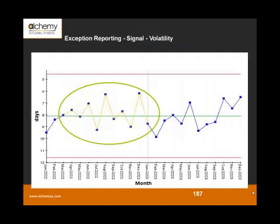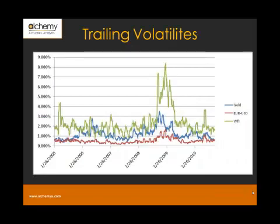The last and final exception type is increased volatility. Looking at the chart, you can clearly see numerous instances where a value goes up and comes down, goes up and comes down on a regular basis.